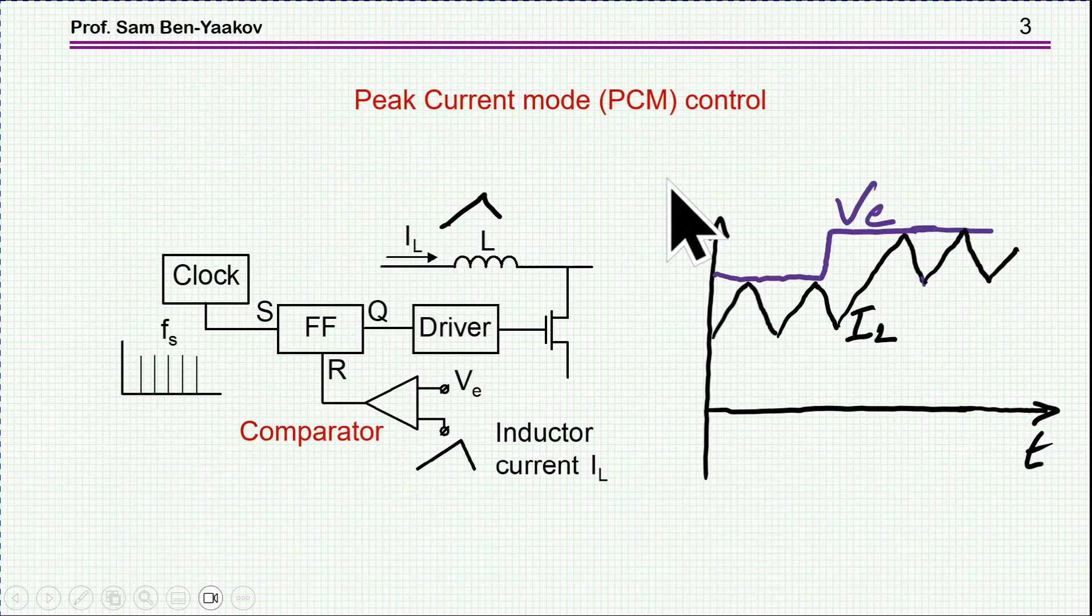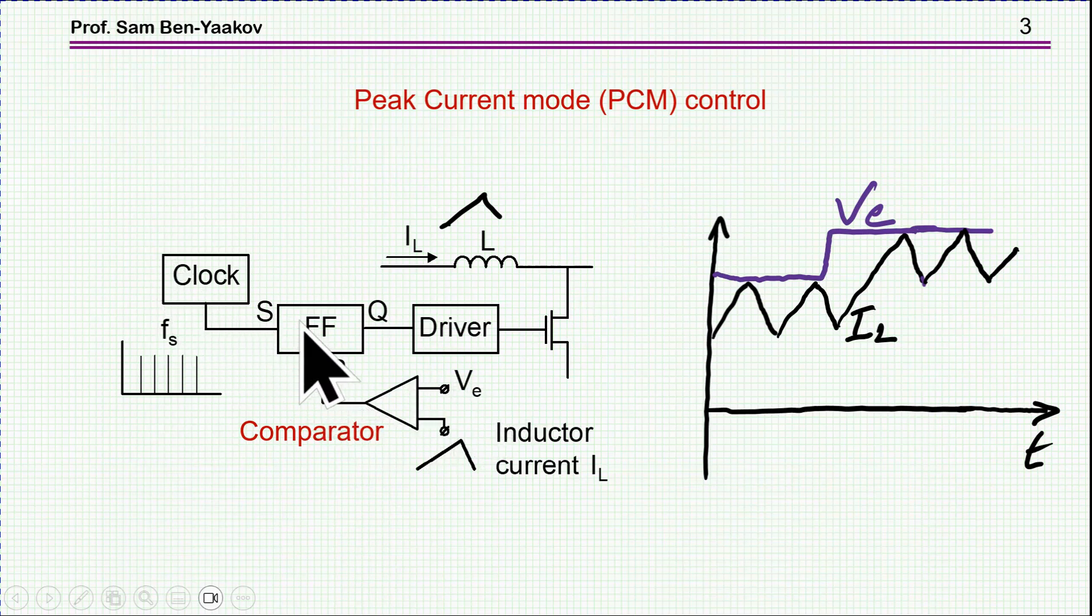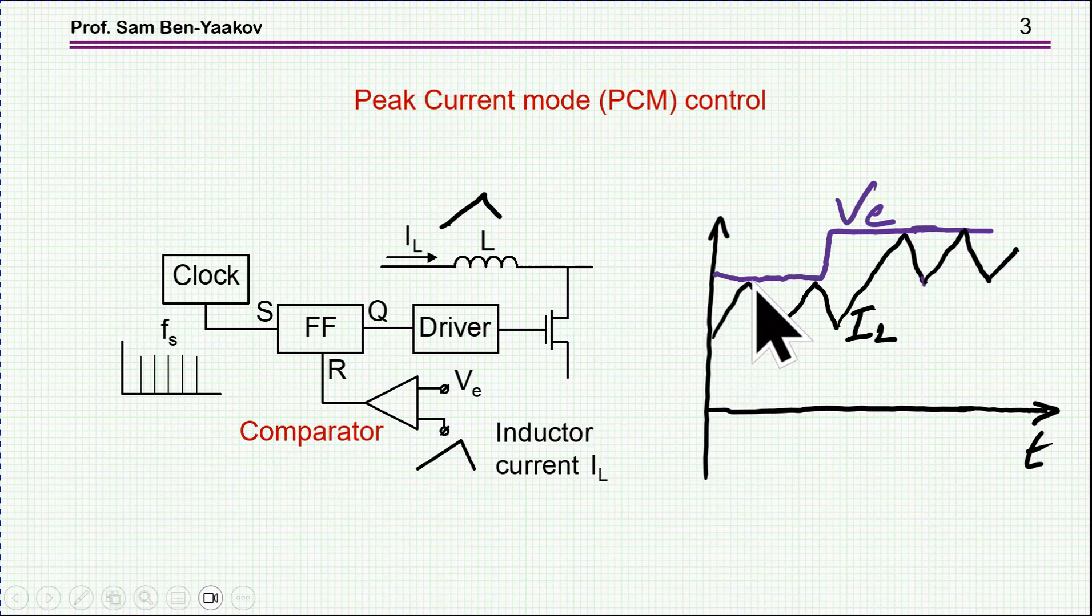Let me go briefly about the operation of Peak Current Mode. I'm showing here a generic representation. We have the clock, which is setting a flip-flop and then causing the gate to go up, and the current increases. As the current reaches the reference level, let's call it V sub E, then through this comparator, the flip-flop is reset and the voltage of the gate is going down. So if V sub E is changing, let's say by a step like this, the peak of the inductor current will sort of follow it.